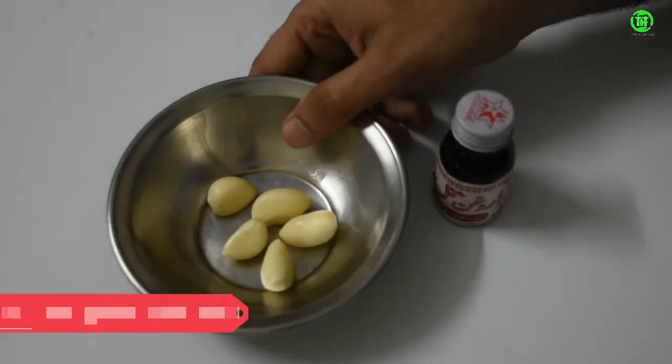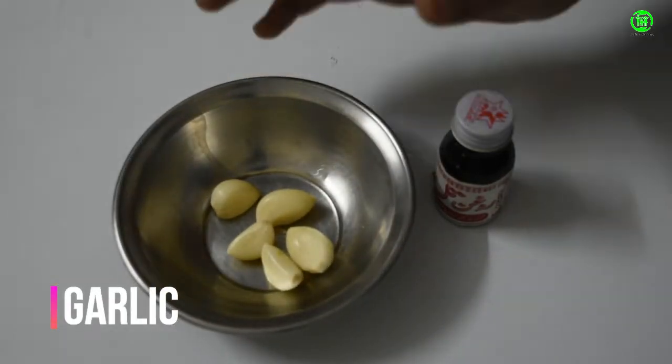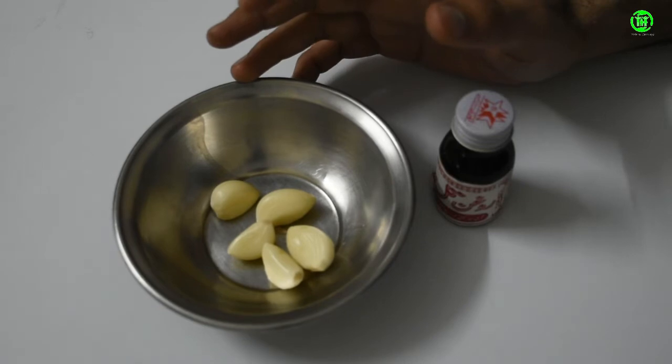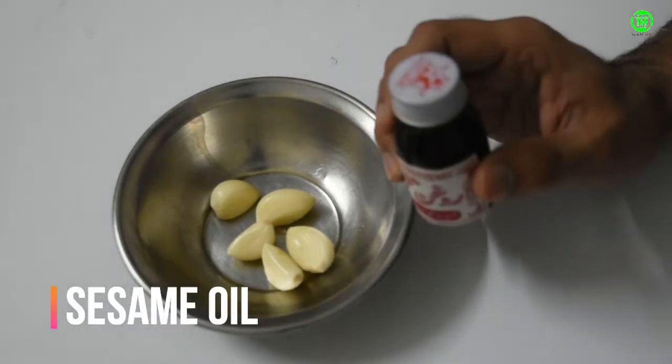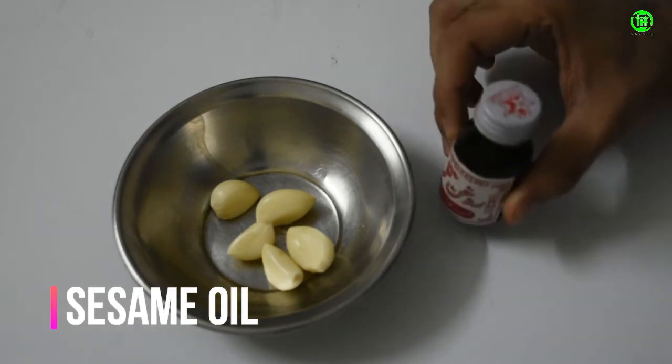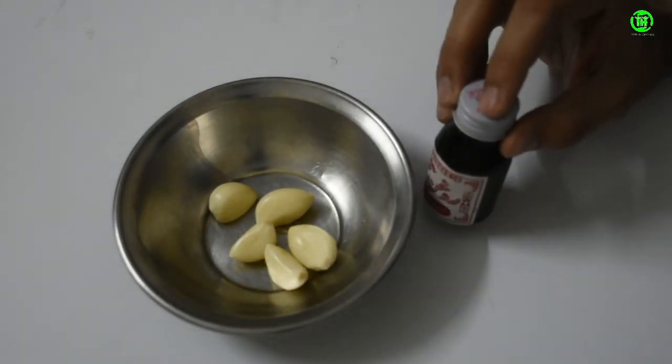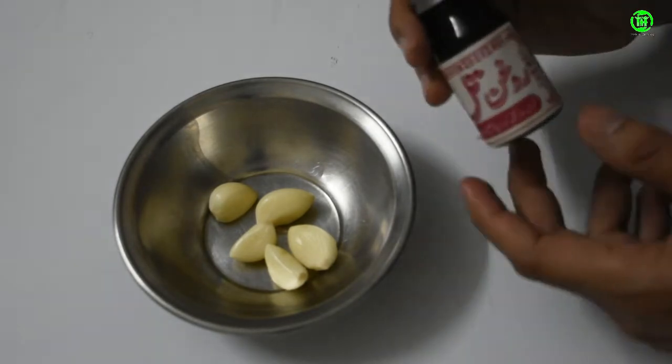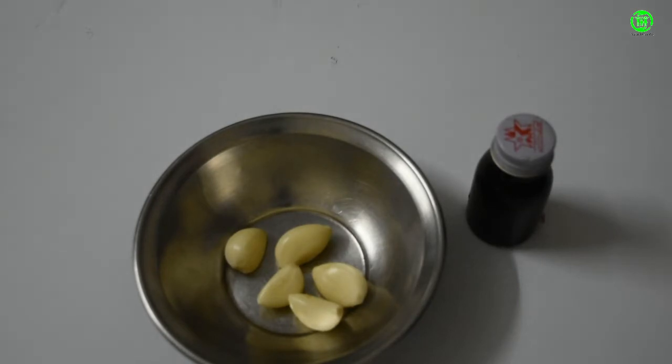As you can see here, I have two very simple things. The first one that I have here is garlic cloves. You have to take five pieces of garlic cloves, and the second thing that I have is sesame oil. So you have to take sesame oil and garlic cloves, five pieces, and this quantity you have to take 10 ml.